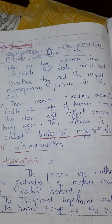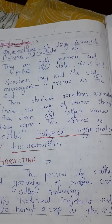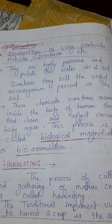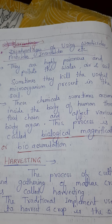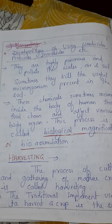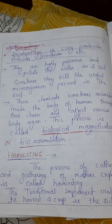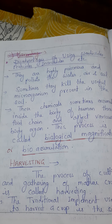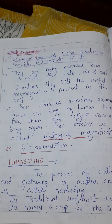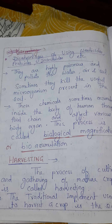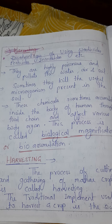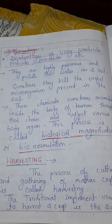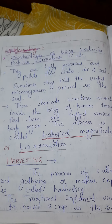These chemicals sometimes accumulate inside the human body through the food chain. This may affect various body parts and can sometimes cause cancer. This process is called biomagnification, biological magnification, or bioaccumulation — meaning the accumulation of harmful chemicals inside the body of living organisms. This is called biological magnification or bioaccumulation, which you will read about in the next class.